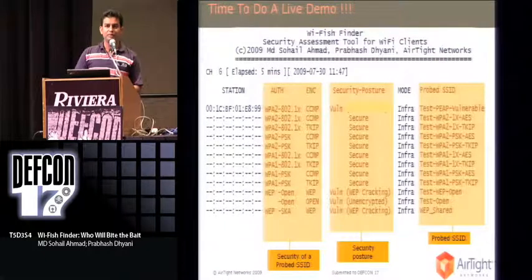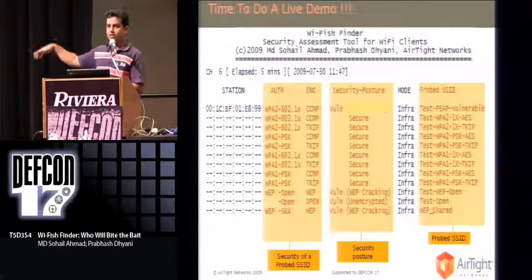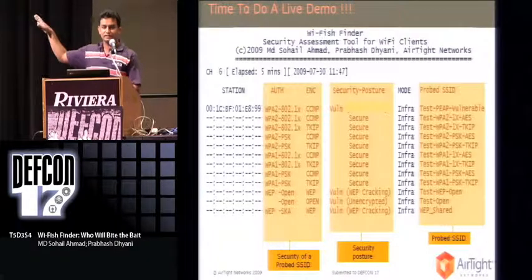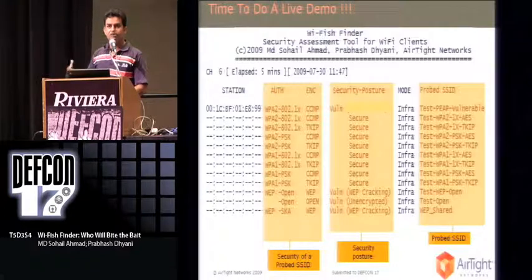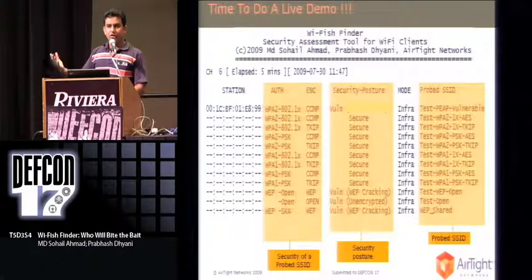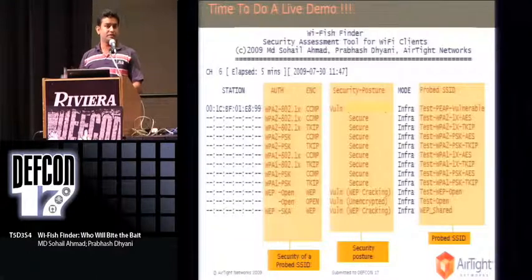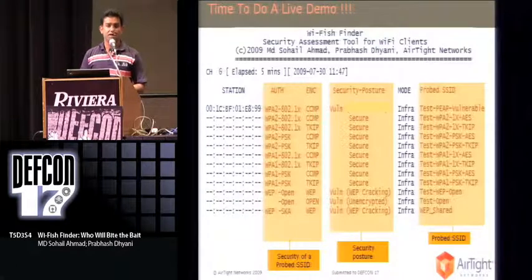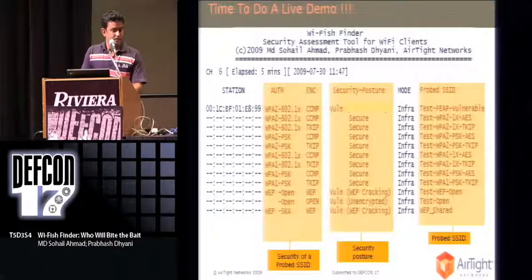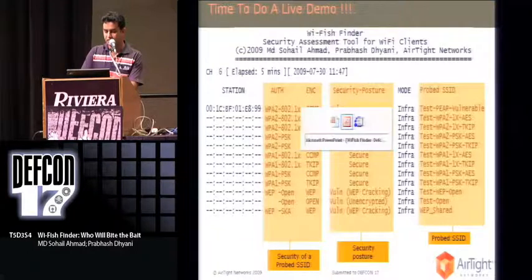When you run Wi-Fish Finder, you get to know about different Wi-Fi clients available in the vicinity. The first column shows the Wi-Fi client MAC address. The second column, which is shaded, tells you about the security of those probed networks. The third column tells you about the security posture of that client for a particular SSID — whether the client is vulnerable or secure, and if vulnerable, the reasons for that. The last column shows the probed SSID. Let's look at a live demo of this tool.